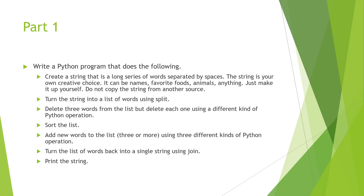The string is your own creative choice — it can be names, it can be whatever. Don't copy from the book. Turn the string into a list of words using the split option. Delete three words from the list, but delete each one using a different kind of Python operation. Sort the list, add new words, turn the list of words back into a single string using join, then print the string.